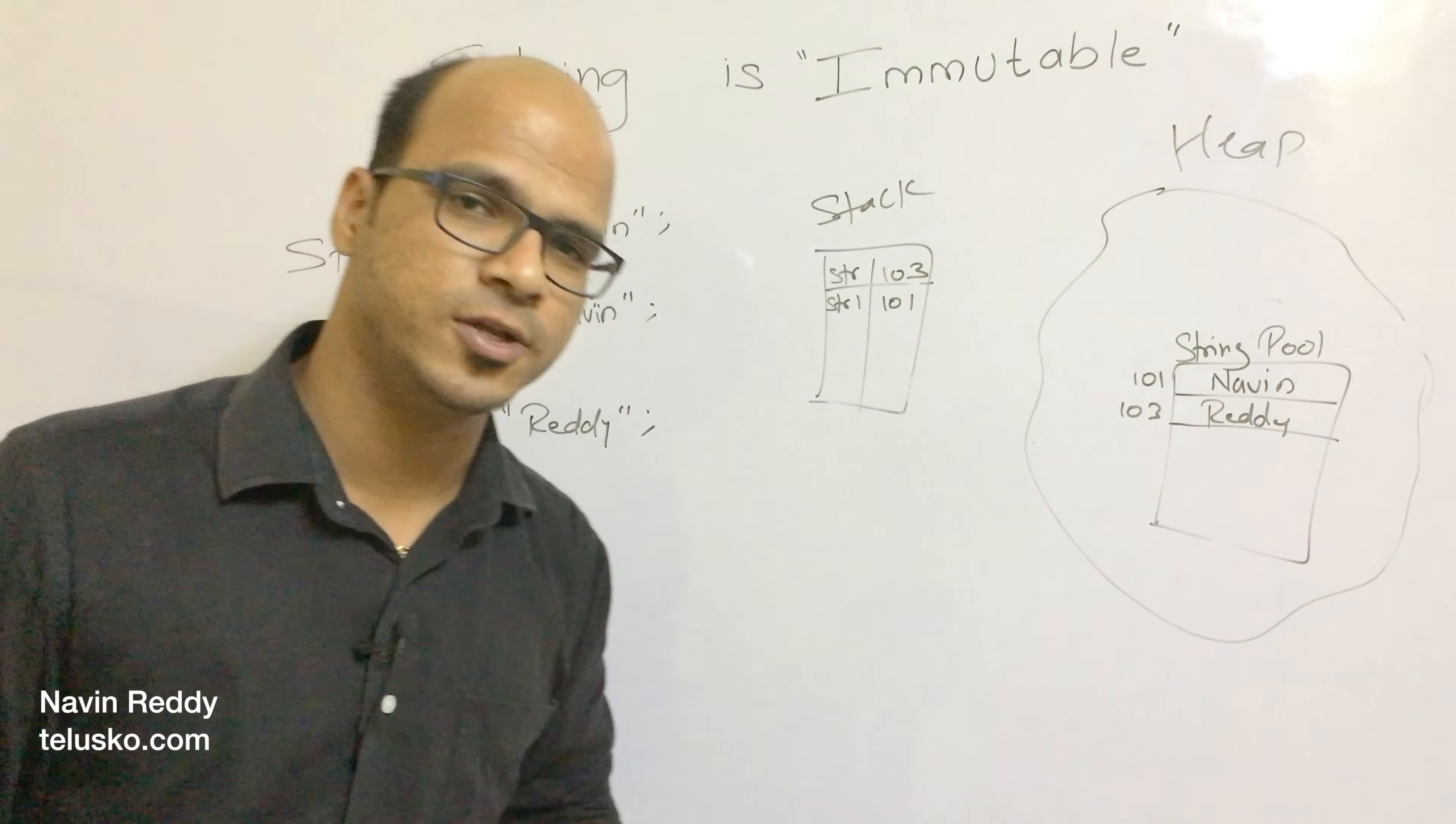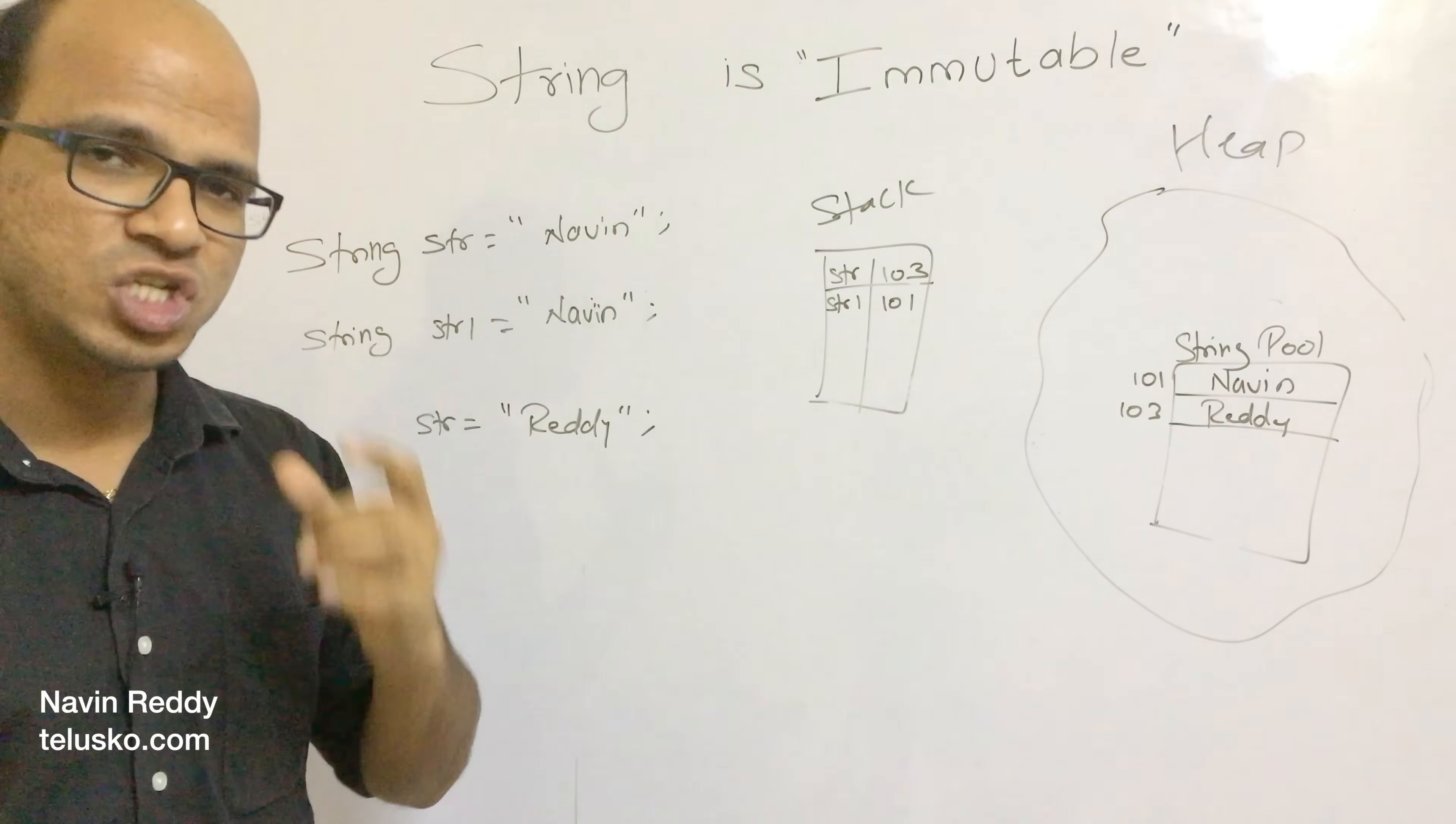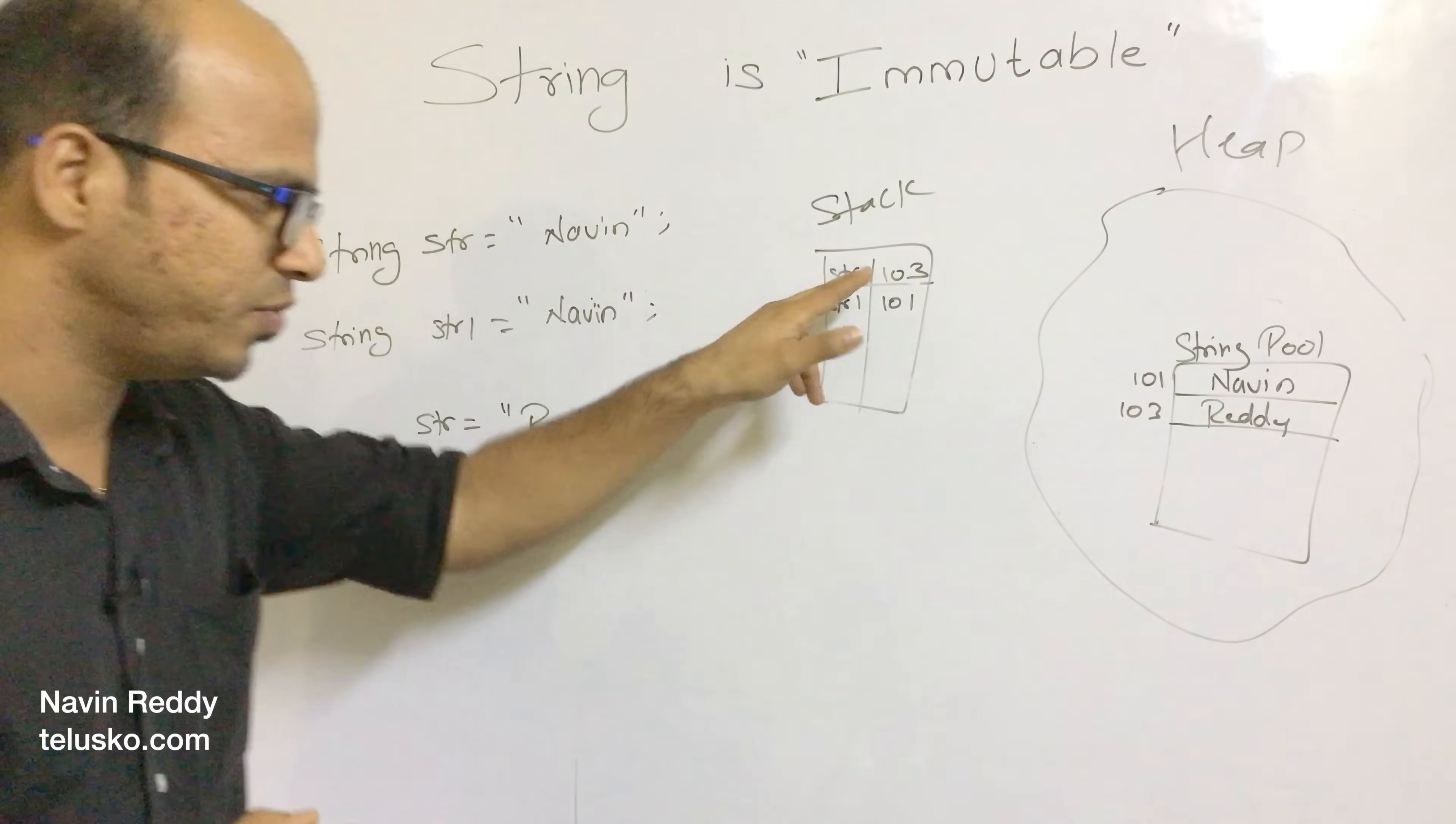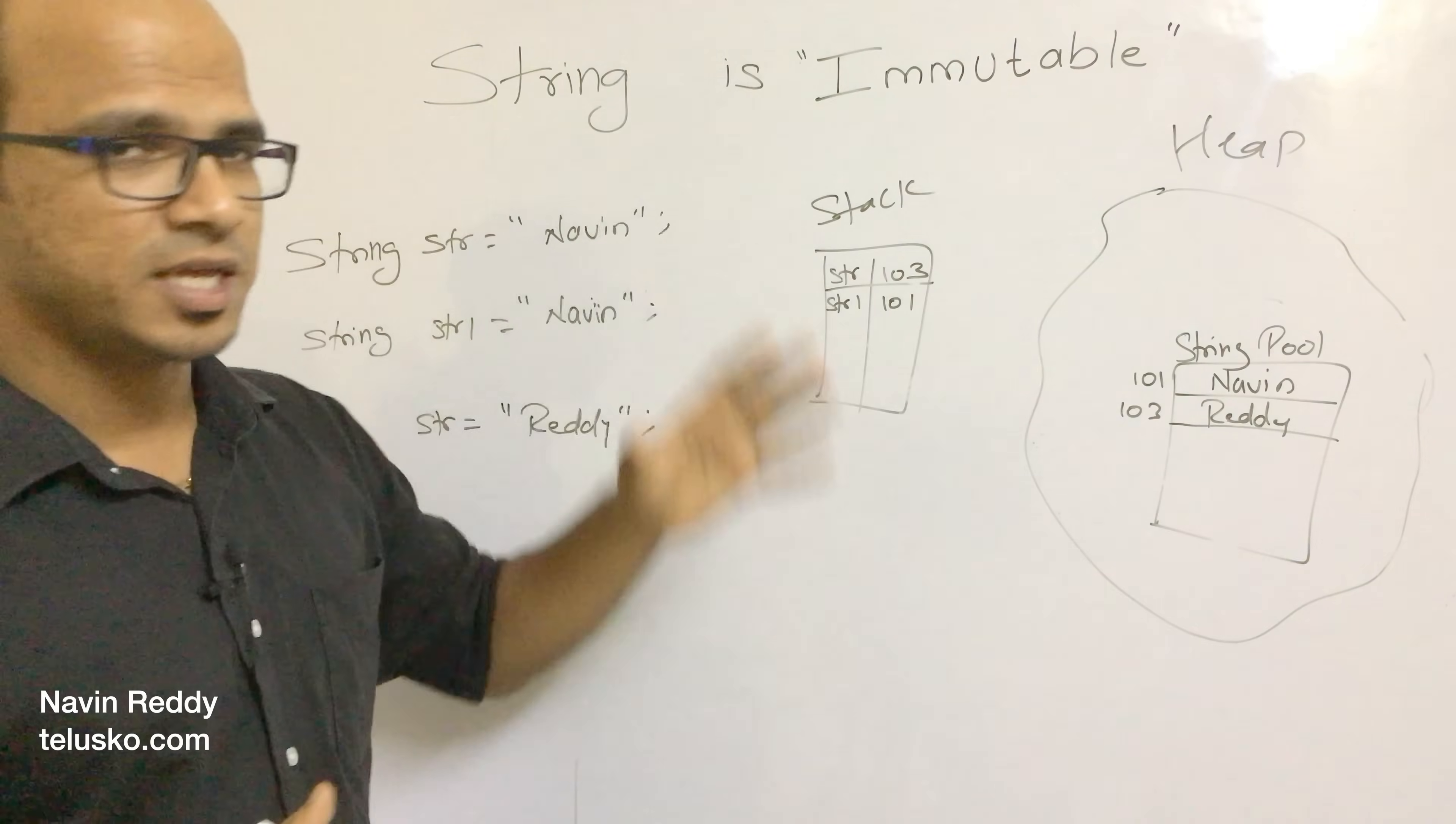And that is what makes strings immutable. You cannot change the value. Once you have defined the string, you cannot change it. This is the object which you are not changing, you are just creating a new object. Every time you change the value of STR, you are actually changing the address and creating a new object, but you are not changing the existing value. That's why strings are immutable.